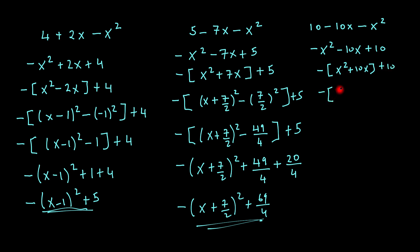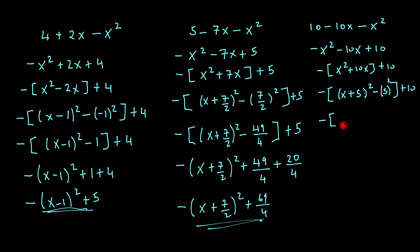Next step would be to open my brackets inside here, which will be — and of course square them, subtract, close this bracket, and add 10. Bring my x down, which will be just x, half the 10, keeping that sign there — that would be half of 10, which is 5. And what I do, I square my 5 here as well. So now I just tidy up. So that's x plus 5 all squared minus 25 plus 10.